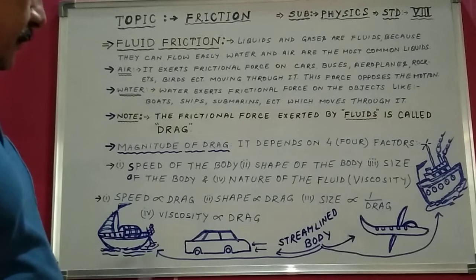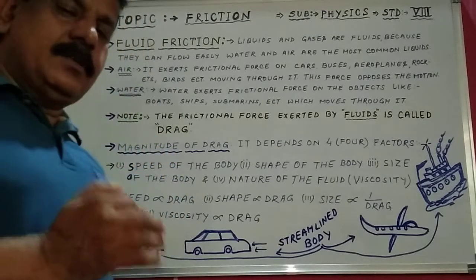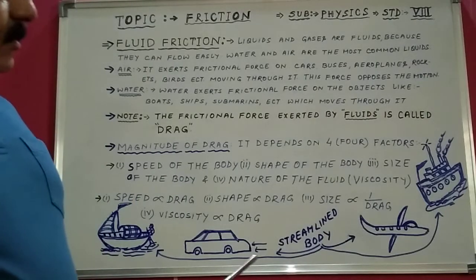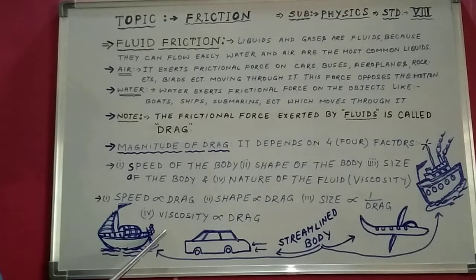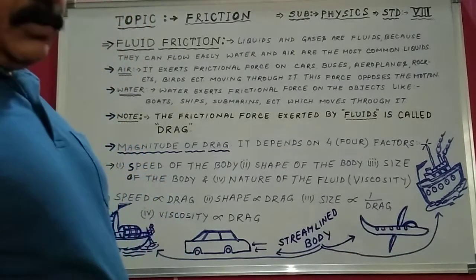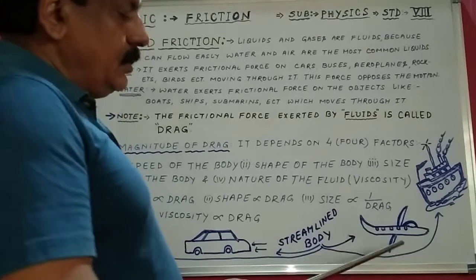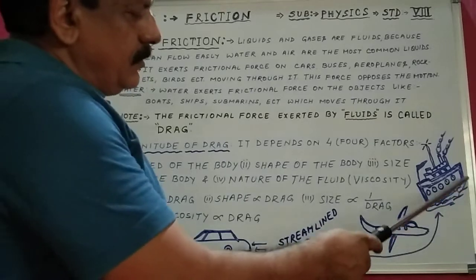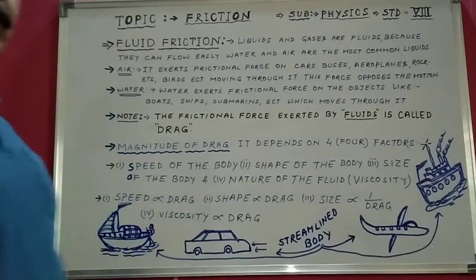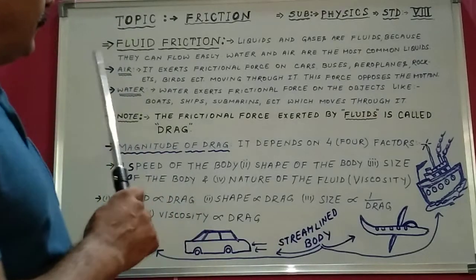I have drawn figures based on fluid friction. To reduce fluid friction and reduce drag, special streamlined shapes are given. A water boat has a streamlined shape — the front part is narrow and the other part is wide. Similarly, a car's front part is narrow. An aeroplane also has a streamlined body shape. A ship also has a streamlined body to reduce friction. These are the streamlined body figures you need to draw.